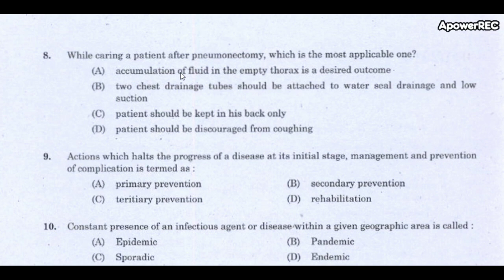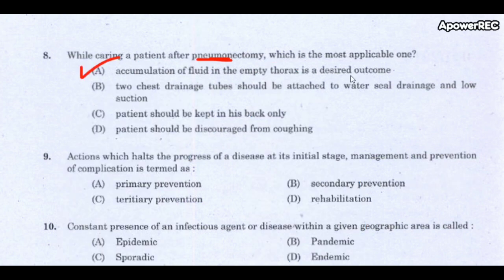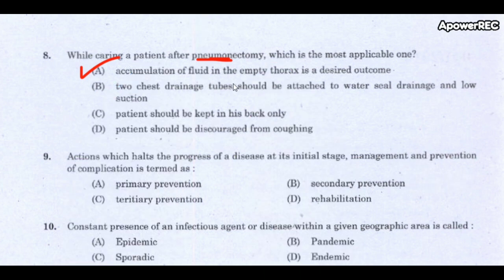Next question: while caring for a patient after pneumonectomy, which is the most applicable consideration? Pneumonectomy means removal of the entire lung. The correct answer is that accumulation of fluid in the mediastinal thorax is a desired outcome. Complications of pneumonectomy include damage to the phrenic nerve and laryngeal nerve. Indications for pneumonectomy are carcinoma of the lung, bronchiectasis, tuberculosis, and chest trauma.